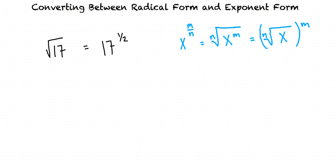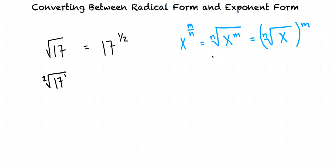I can see that in this case 17 is x, but I don't see an m or an n. Remember that we can think of 17 as 17 raised to the first power, so m equals 1. And a square root sign with no shown n value indicates that n equals 2. Now that we see m is 1 and n is 2, we can rewrite this as 17 raised to the 1 over 2.